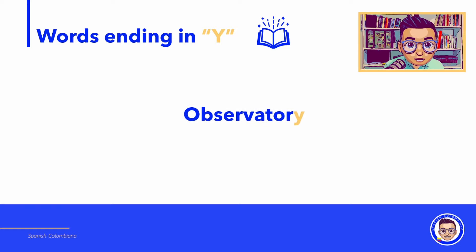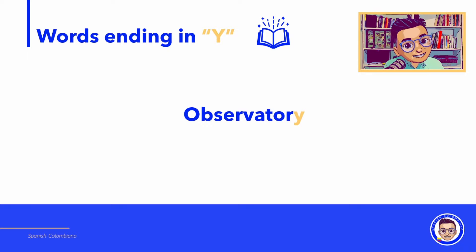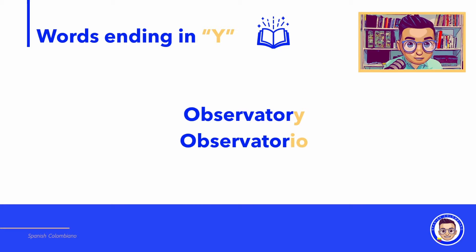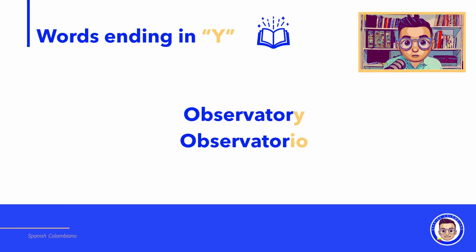Observatory — how do you say that in Spanish? Observatorio. Just change the Y for IO and it becomes observatorio.